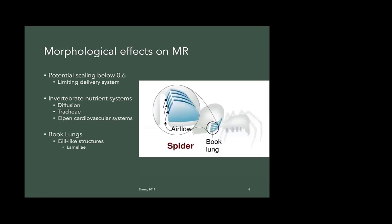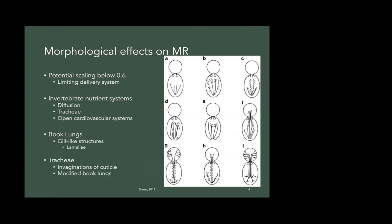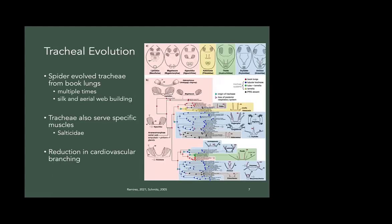Spiders specifically have book lungs and they have differential trachea depending on the species. Their trachea actually evolved from book lungs multiple times. Ramirez et al. 2021 actually just showed this, and they evolved in conjunction with silk and aerial web building in Araneomorphs. In more derived spiders like salticids, there's actually trachea that serve specific muscle groups. And the advent of trachea is actually coincided with a reduction in cardiovascular branching.